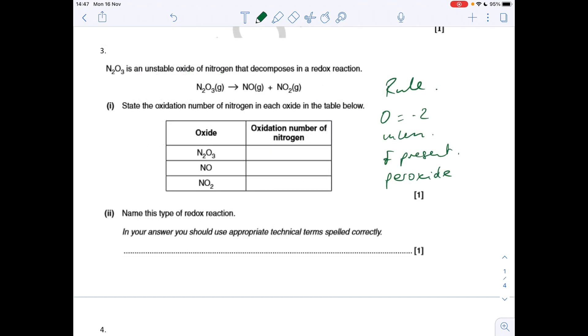So question three now. I've written down the rule for oxygen. Oxygen's rule is that it's -2 oxidation number, unless fluorine's present, in which case it would be +2, or if it's a peroxide, like hydrogen peroxide, it's -1. Well, we've got neither of those in this case, so oxygen will be -2. So in the first one, we've got three oxygens. So -2, -2, -2. So each nitrogen is going to be +3. NO, we've got a single O, so that's -2. So that's got to be +2.